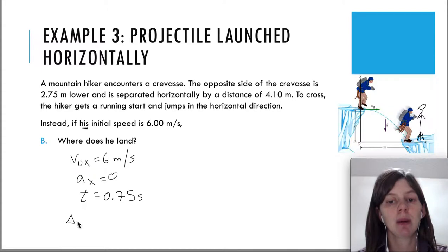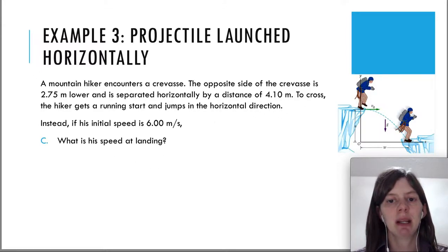And now we can use the kinematic equation. Delta x equals v-0-x times t. Plug in 6 times 0.75. And this time, we get 4.49 meters. So instead of just traveling 4.1 meters to get to the edge, when he goes a little bit faster, he travels a little bit further. Let's go ahead and do the last part of this example.